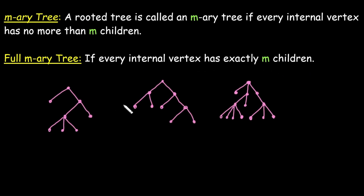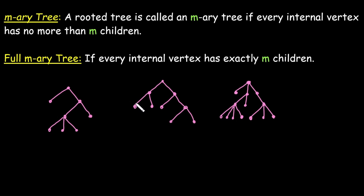Now let's look at a few examples. In the following figures, we need to identify whether each one is an m-ary tree or a full m-ary tree, and what type it is — for instance, whether it is a 3-ary tree, 4-ary tree, or something else.